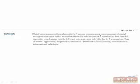Another benign condition to know is varicocele, which describes dilated veins in the pampiniform plexus due to increased venous pressure. It's usually seen on the left side, due to increased resistance to flow from the left testicular vein's connection to the renal vein, versus the right testicular vein's direct connection to the IVC. In long-standing cases, it can lead to decreased fertility due to increased temperature.